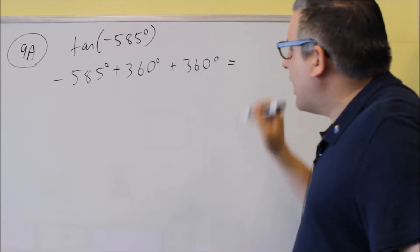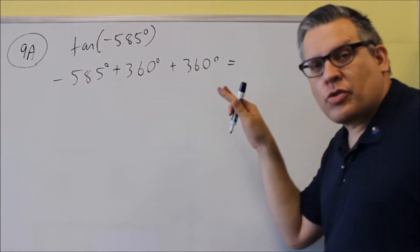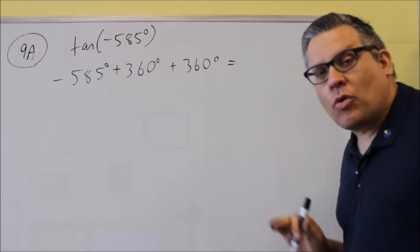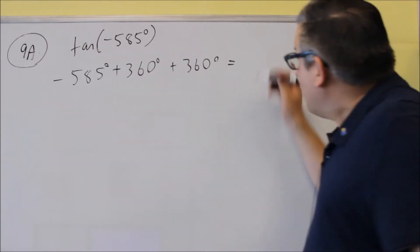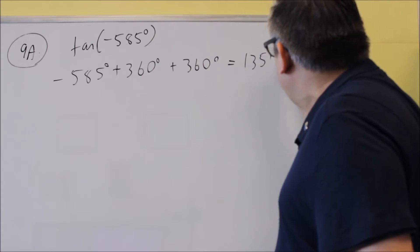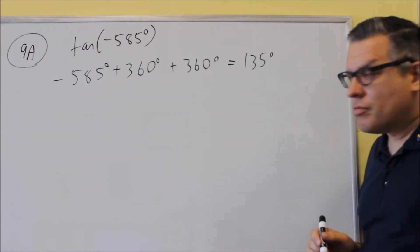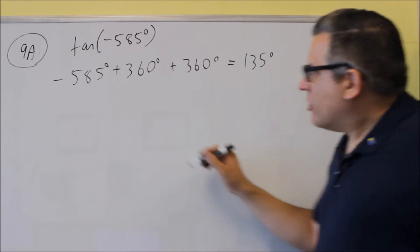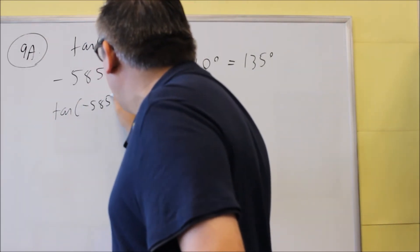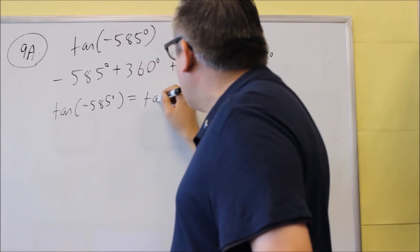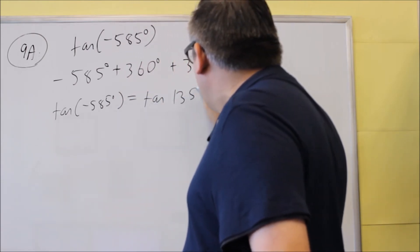By doing that, that will give me a positive result. As soon as I get a positive result there, I'm going to stop. I don't need to add any more 360s. Once I do that, I get 135 degrees, which means that your tangent of negative 585 is exactly the same thing as tangent 135.